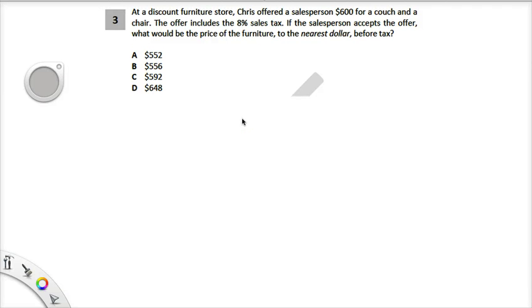Hello scholars, we're back once again taking a trip to the discount furniture store. At the discount furniture store, Chris offered a salesperson $600 for a couch and a chair. The offer includes a percent sales tax. If the salesperson accepts the offer, what would be the price of the furniture to the nearest dollar before tax?